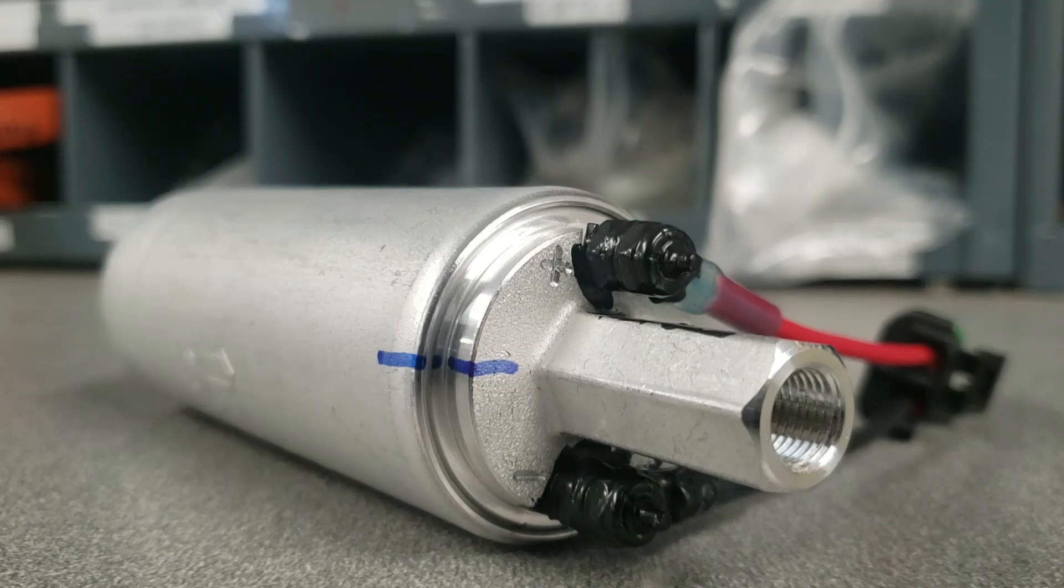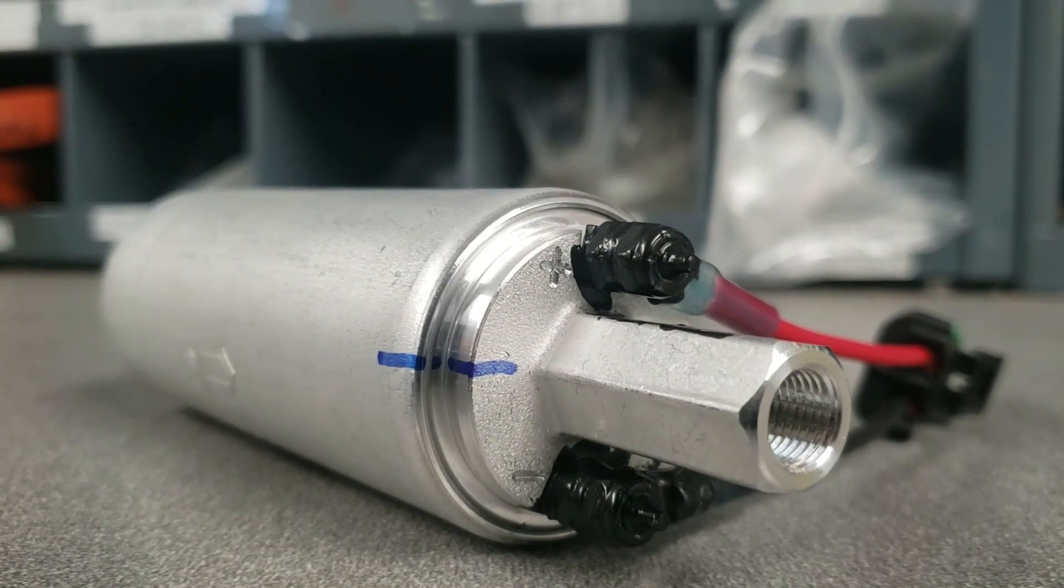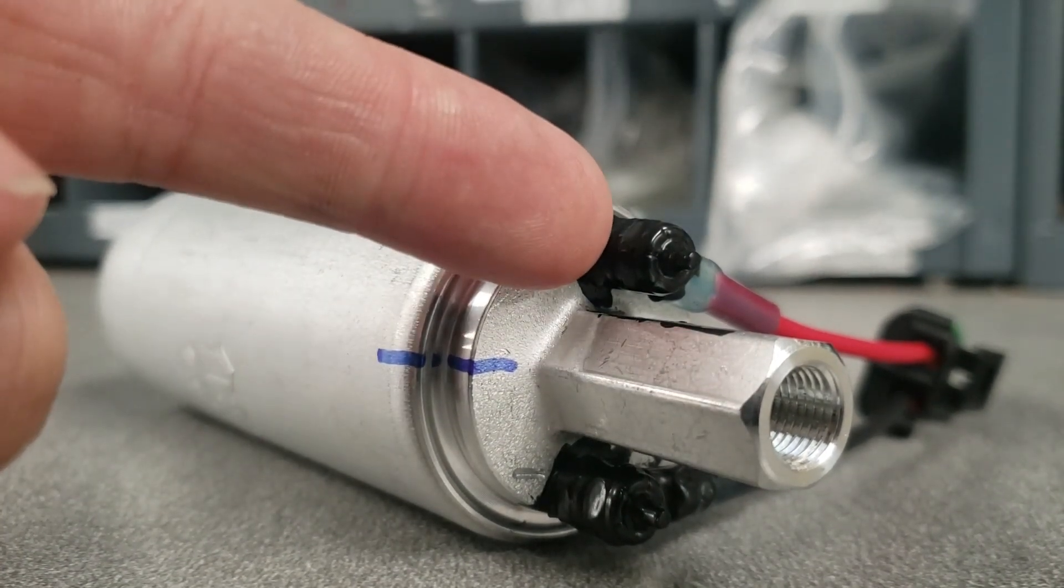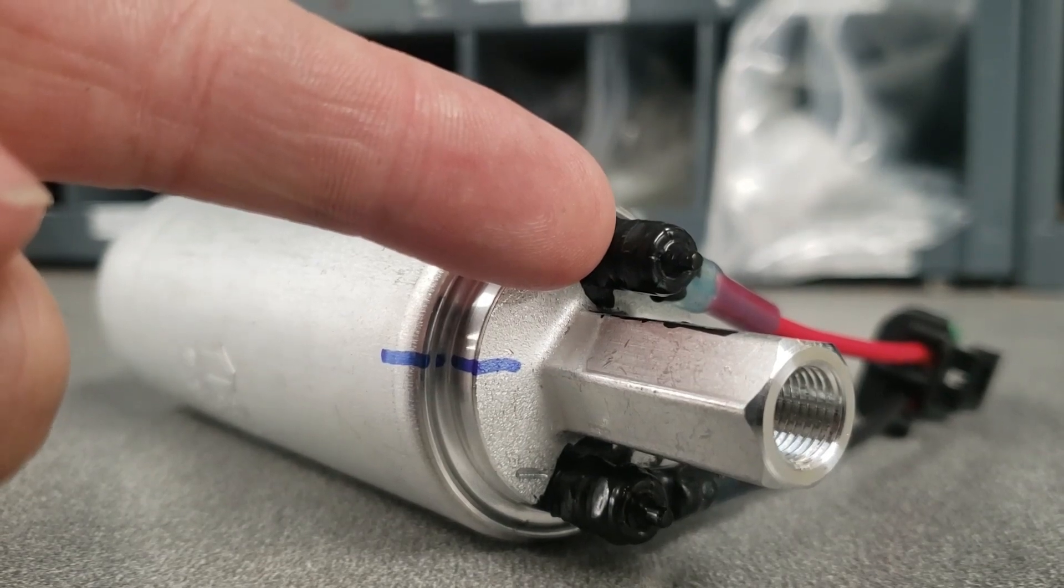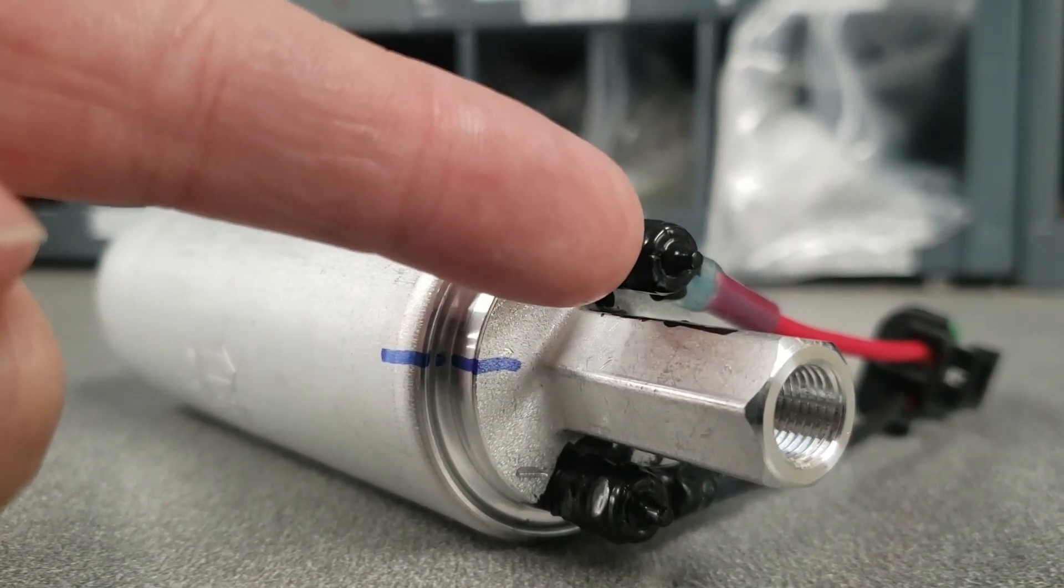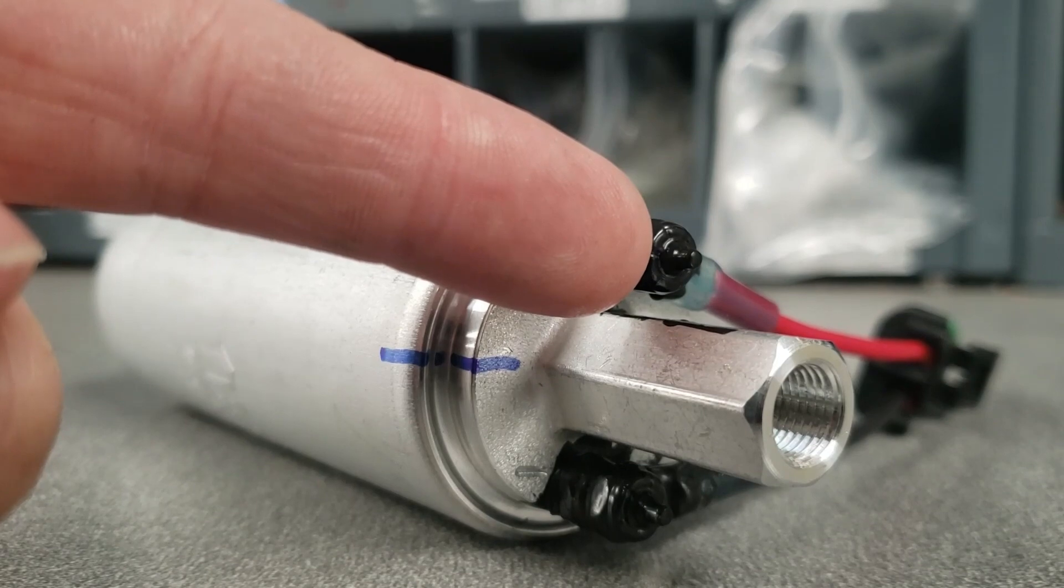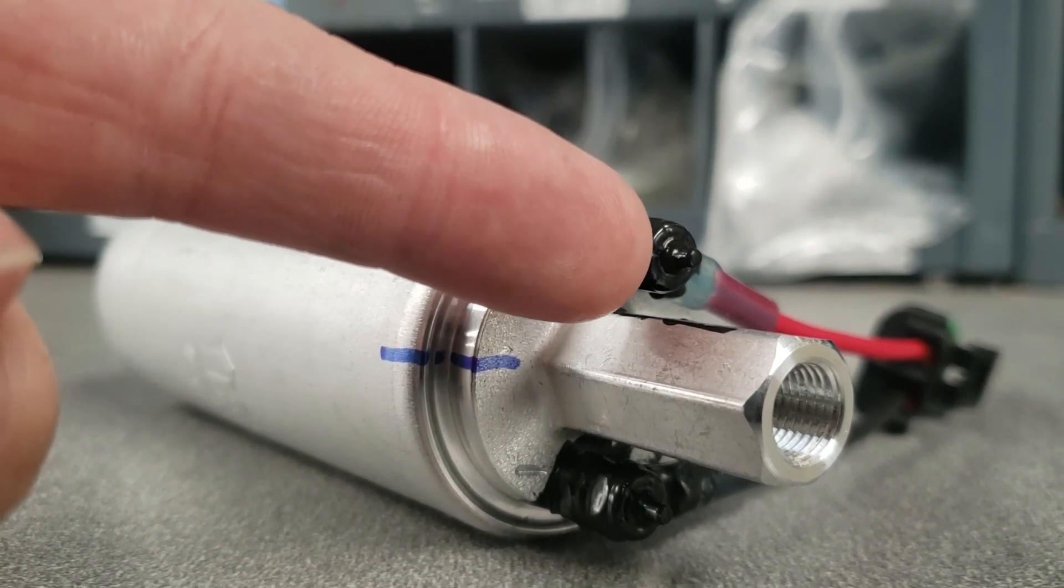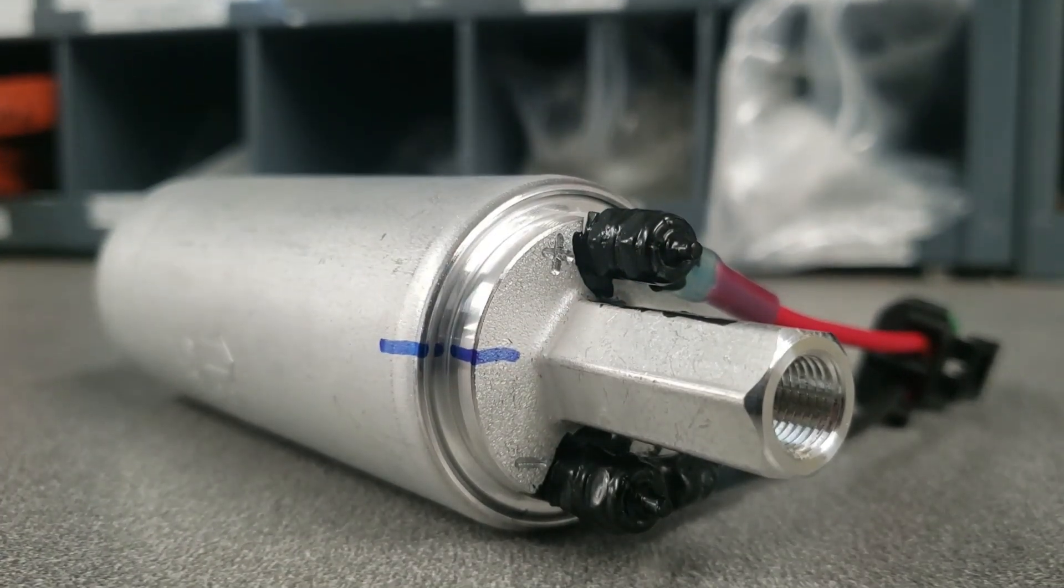The other thing is that there's two nuts actually on this Walbro fuel pump. The inside one that's closest to the pump body itself, I don't ever want you to mess around with that. And then the one that's on the outside, that's the one that you can take on and off if you ever have to swap the harnesses or anything like that.